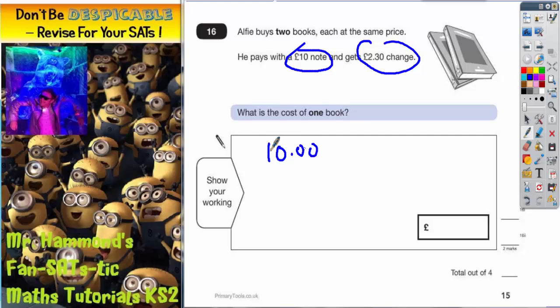...with our ten pounds and we take off the two pound thirty change, the difference must be whatever we paid for the two books. You can probably do this in your head - if you take 30p off ten pounds, you're left with nine pounds seventy...